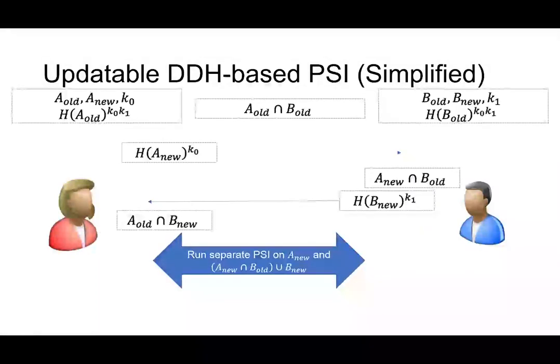Now, Alice want to learn the A_new intersection with the whole B set. Naively, she can run this separate PSI on A_new and the whole B set. But this will incur linear communication to the size of B. We will not accept that. But we have an observation here. Bob already know A_new intersection with B_old.